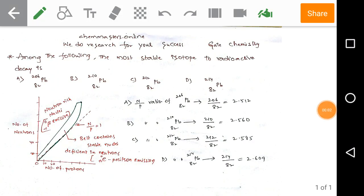Welcome to Chemastro Start Online. We are discussing GATE previous year solved problems. Look at the given problem: among the following, find the most stable isotope to radioactive decay.